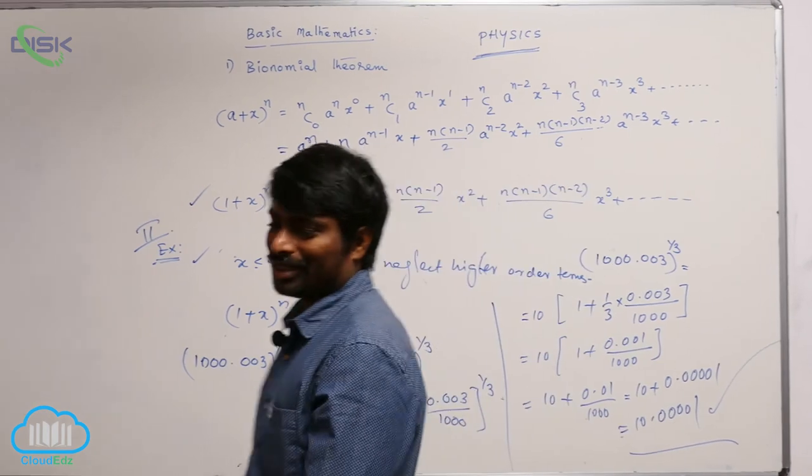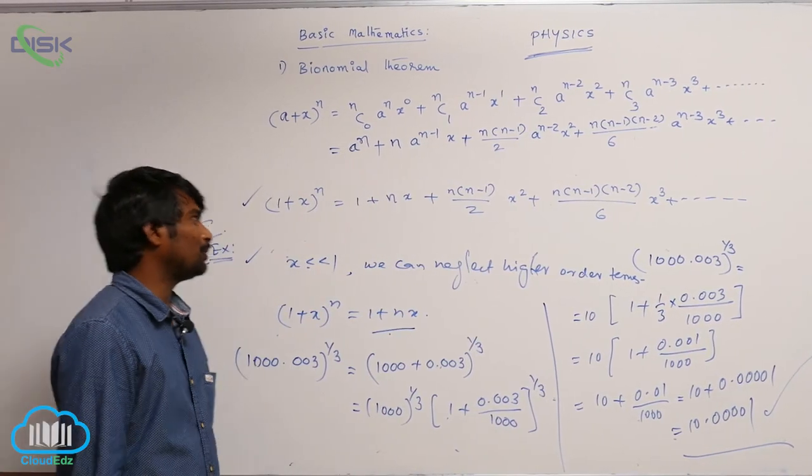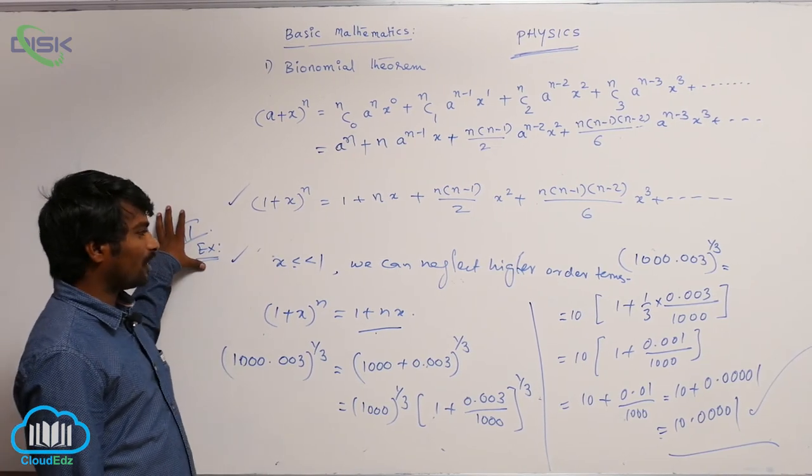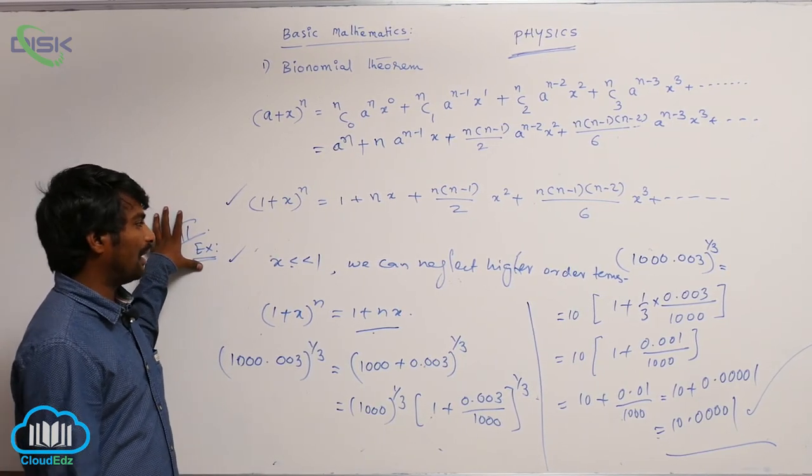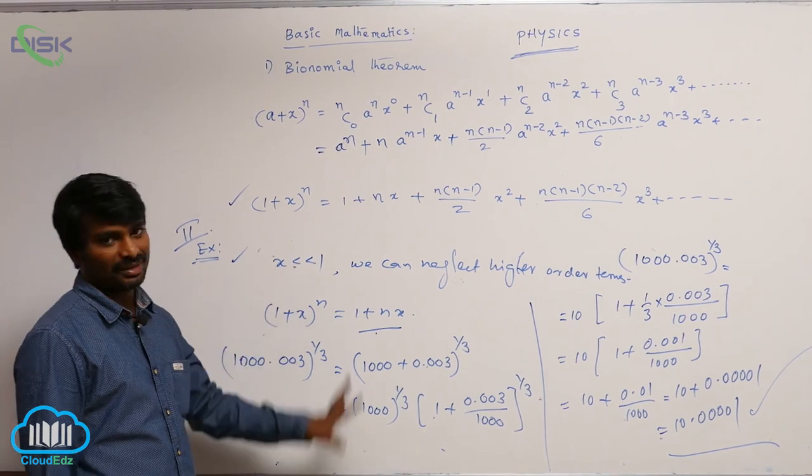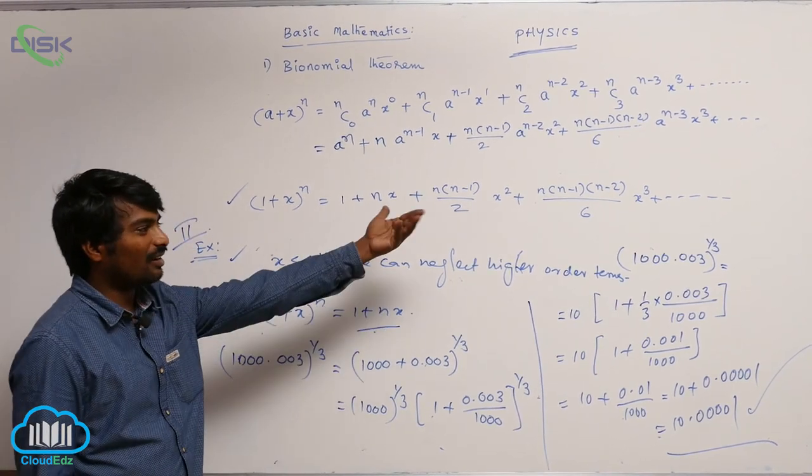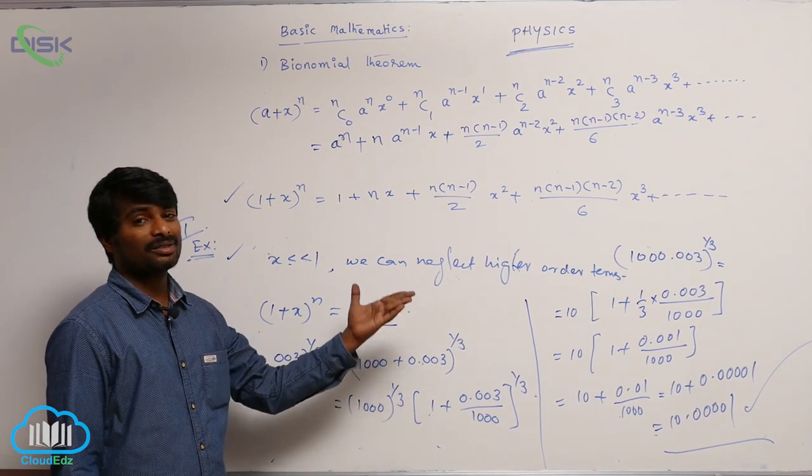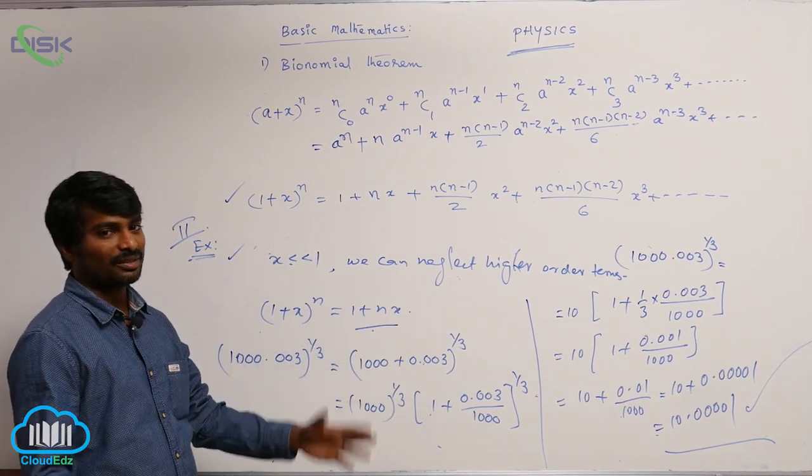So, this is what we can do, only with the help of binomial theorem. And this is second part exclusively, when x value is very much less than 1. By neglecting higher order terms, we are going to solve the problem approximately, not 100% correct.